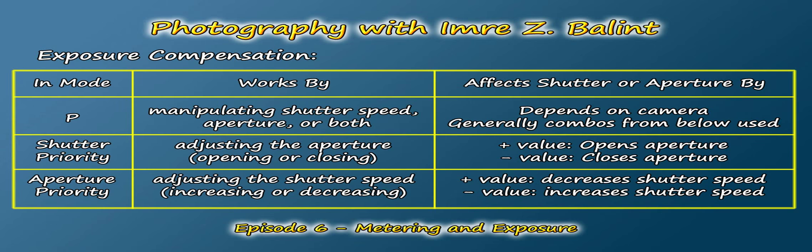In P mode, exposure compensation works by manipulating the shutter speed, aperture, or both. In shutter priority, where you set the shutter speed, it adjusts the aperture. And in aperture priority, where you set the f-stop, exposure compensation adjusts the shutter speed.